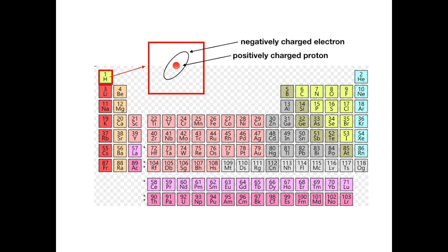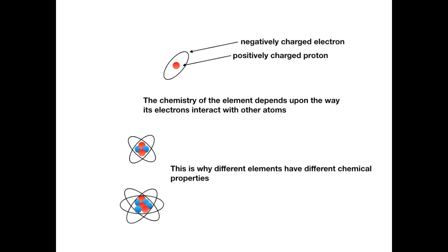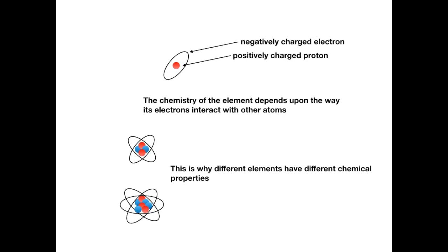An atom of hydrogen consists of a positively charged proton in the nucleus with a negatively charged electron in orbit around it. The chemistry of any element depends upon the way its electrons interact with other atoms. This is why different elements have different chemical properties. The configuration of their electrons is different, which gives them their basic chemistries. Now uranium will form soluble salts where those of lead are generally insoluble, and as a result, those soluble uranium salts are concentrated in those aforementioned zircon crystals as they form, and lead is generally excluded. Can I be a hundred percent certain that no lead gets into the zircon crystal? No, of course I can't, but it is a good starting point as we will see in a little while.